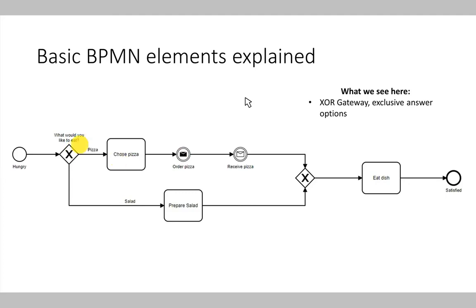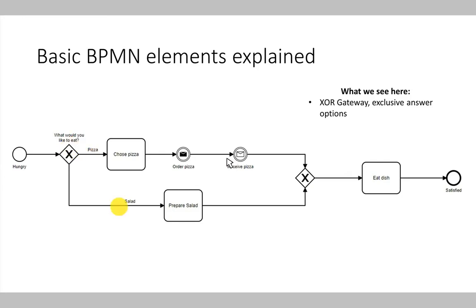Another element of the BPMN modeling language are gateways. A gateway is represented by a rectangular shape, with a little icon representing what the gateway is about. The first gateway is an XOR gateway — an exclusive OR gateway. Our process starts with being hungry, arrives at the gateway, and there is a question: what would you like to eat? If we decide to eat pizza, the process takes the upper path — we choose a pizza, order it, receive the pizza, eat the dish, and our hunger is satisfied. If we opt for a salad instead, we prepare a salad, eat it, and the process ends with a satisfied end event. So an XOR gateway enables us to either choose one or another process path.